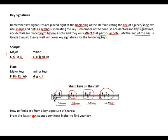How to find a key from a key signature of sharps. From the last sharp, you count a semitone higher to find your key. So if the last sharp is F sharp, a semitone higher would be G. A semitone higher from G sharp would be A major. A semitone higher from D sharp would be E major.